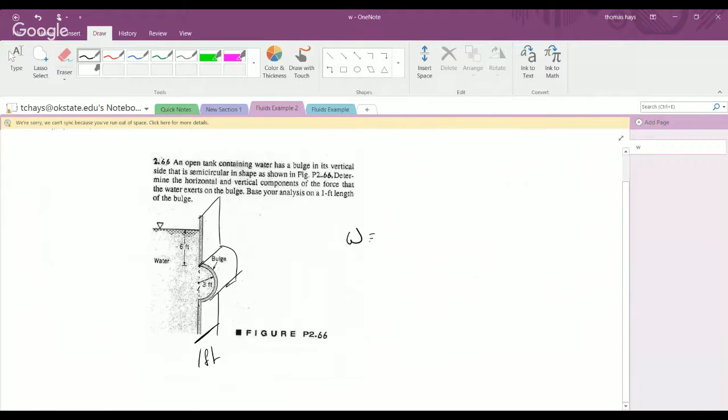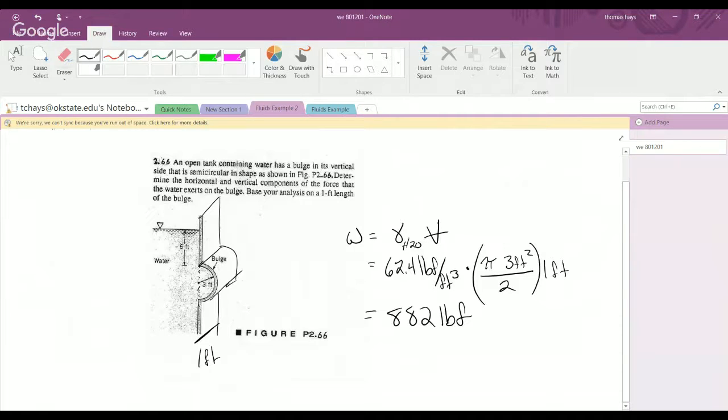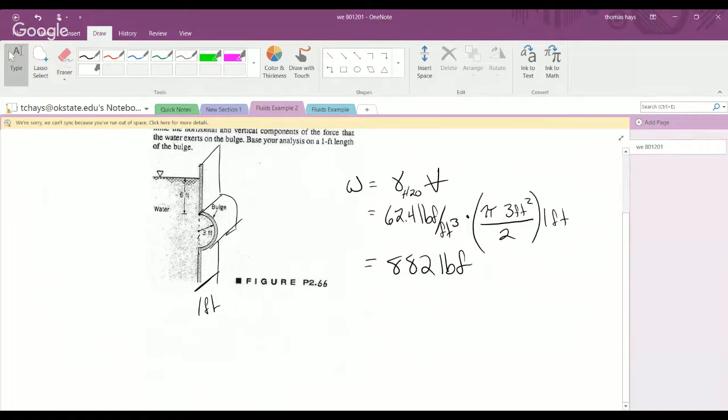The weight of the fluid in that region is the specific weight of water. In fact, instead of using W, we'll take a quick suggestion and call it a specific weight of H2O, multiplied by the volume inside of that region. So this is a simple calculation going forward. So 62.4 pounds force per foot cubed times the equation for volume, which in our case will just be pi times radius squared divided by 2, multiplying all that by the one-foot depth, which makes it quite easy to find that the total weight is 882 pounds force on that region of fluid. Curiously enough, that's already one of the answers.